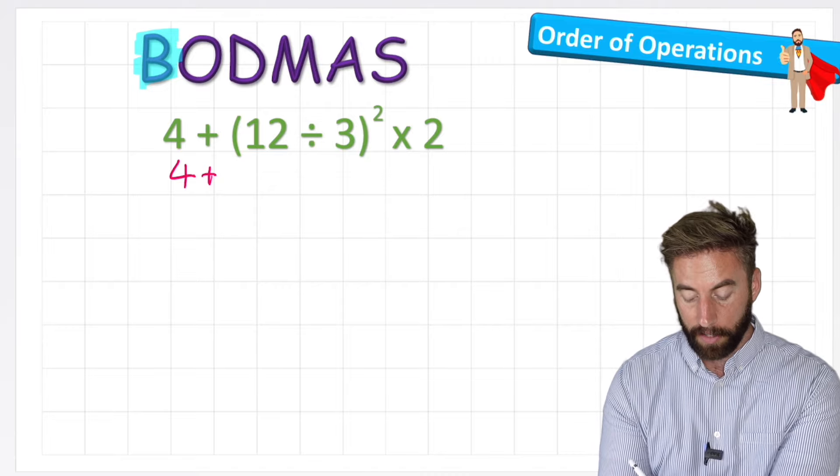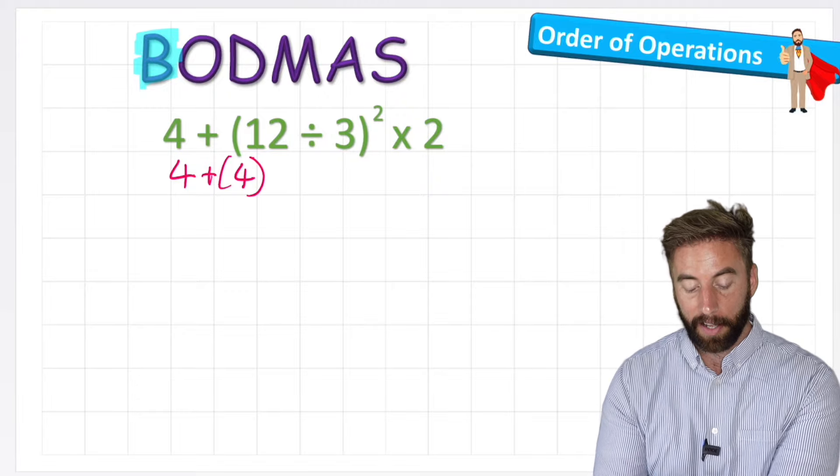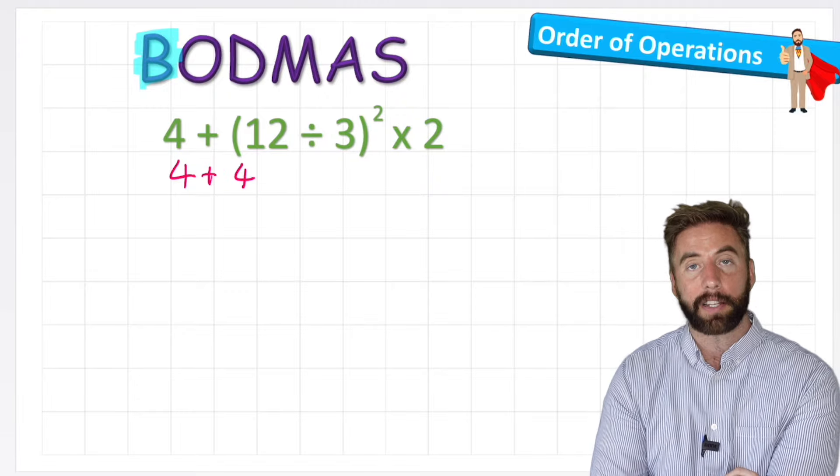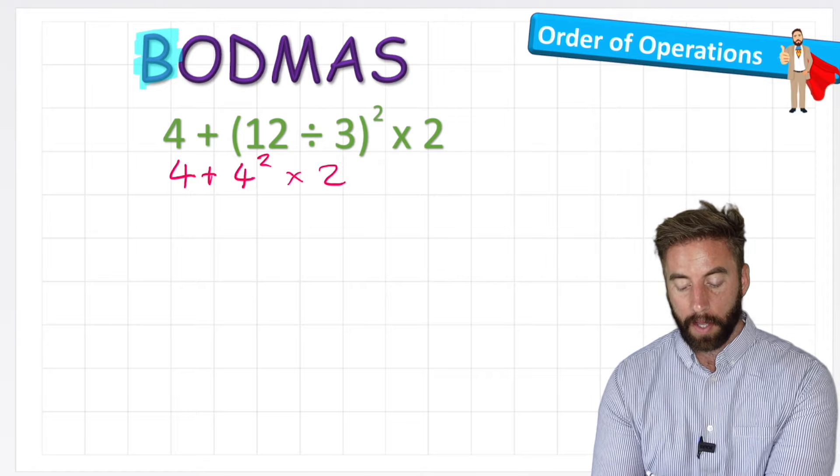So 12 divided by 3 is 4. And because now 4 is the only thing inside the bracket, I can actually now get rid of my brackets. It'll be 4 to the power of 2 multiplied by 2.